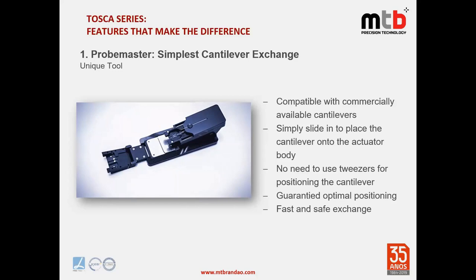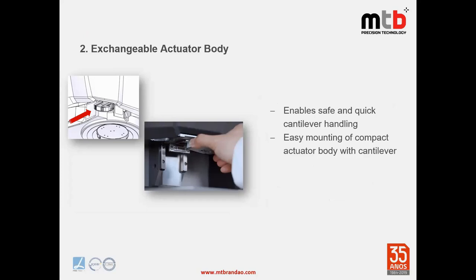For some instruments on the market, the user needs to handle the entire instrument head, but with TOSCA this is not necessary — only the actuator body needs to be removed. A very important but complex step when performing AFM measurements is laser alignment, which can be time-consuming especially for inexperienced users. Therefore, TOSCA provides a fully automatic laser alignment function. After loading the cantilever onto the actuator body and placing it on the AFM head, the instrument carries out laser alignment automatically after just two clicks in the software.